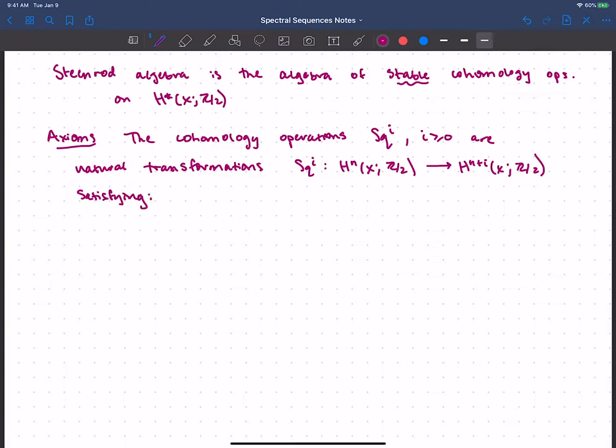Satisfying, I'll call this property zero. The first thing, or the zero thing, I suppose, is that square I should be a homomorphism. So we saw that works out mod 2 if we take our cup square. That's just saying that this distributes over sums. The cohomology of a space is an abelian group, and I want to respect that structure.